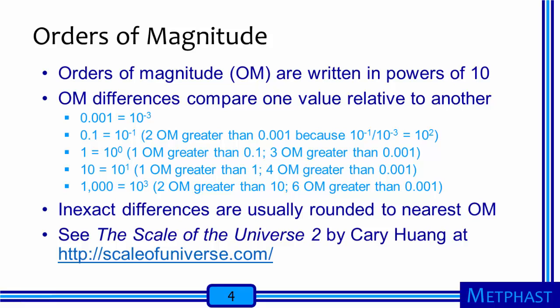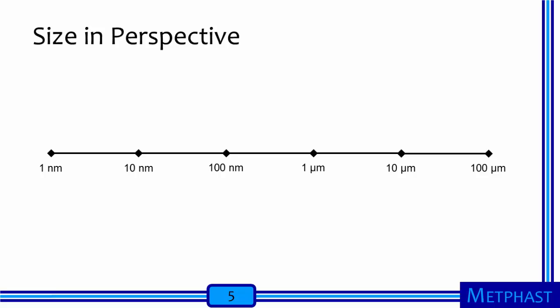Because nanotechnology produces stuff at the nanometer scale, this stuff may interact with parts of the human body — organs, cells, DNA — differently than other things that are small to humans but are at the micrometer or millimeter scale, which are many orders of magnitude larger than the stuff created by nanotechnology. One micrometer is one times ten to the minus sixth meter, and one nanometer is one times ten to the minus ninth meter. So there are six orders of magnitude difference between one micrometer and one meter, and nine orders of magnitude difference between one nanometer and one meter.